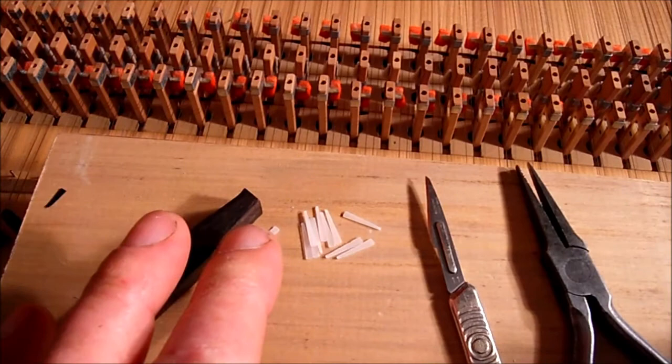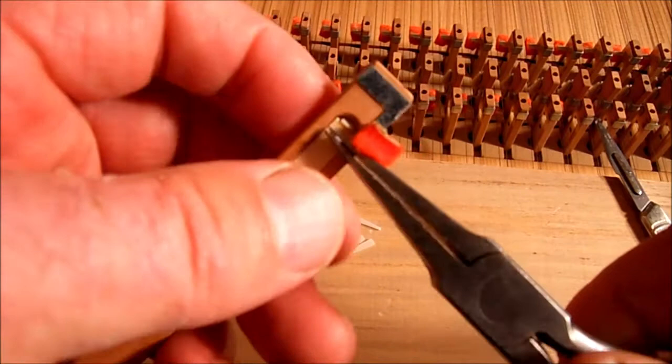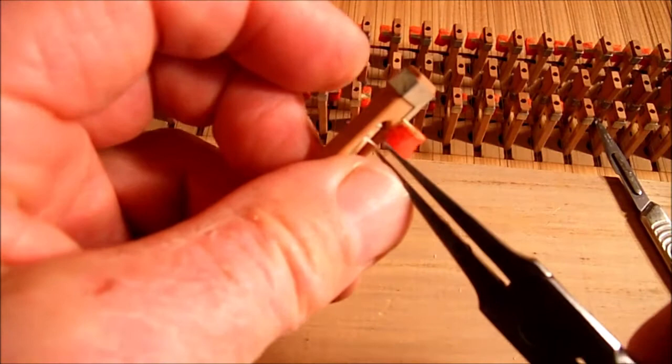The first step is to take the old plectrum out, and I do that by grabbing what remains, and pushing it from the front of the jack to the back with the long nose pliers, and take it out from the back.